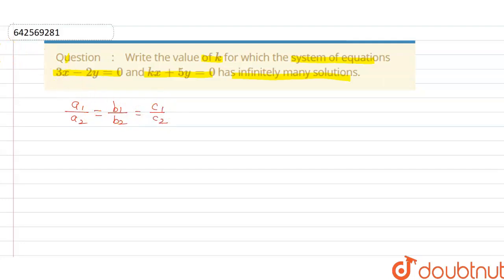Now first we write the given equations: 3x minus 2y is equal to 0, this is our first equation, and kx plus 5y is equal to 0, this is our second equation.